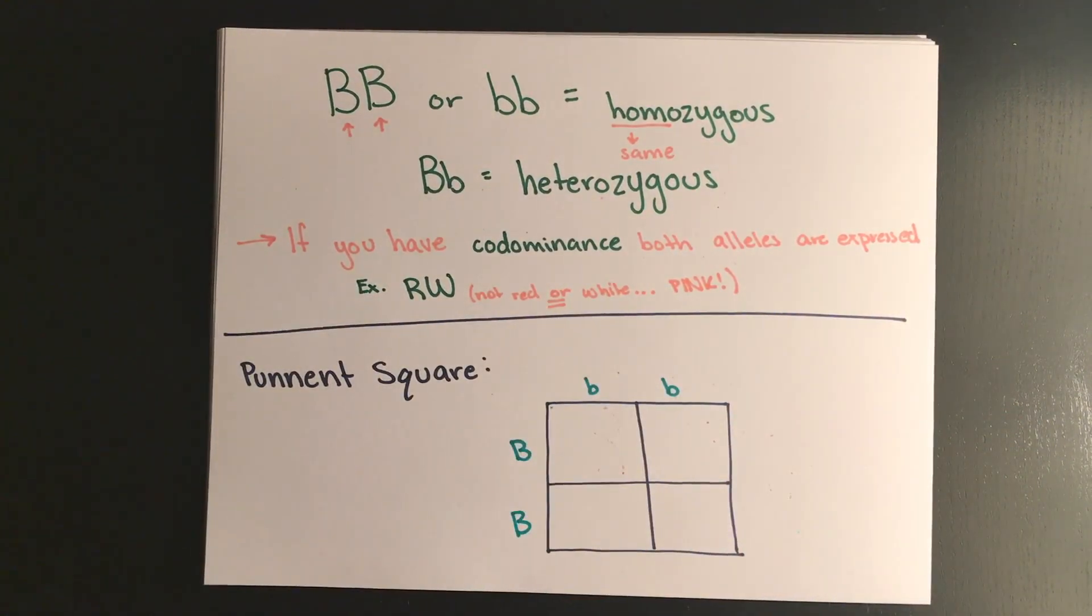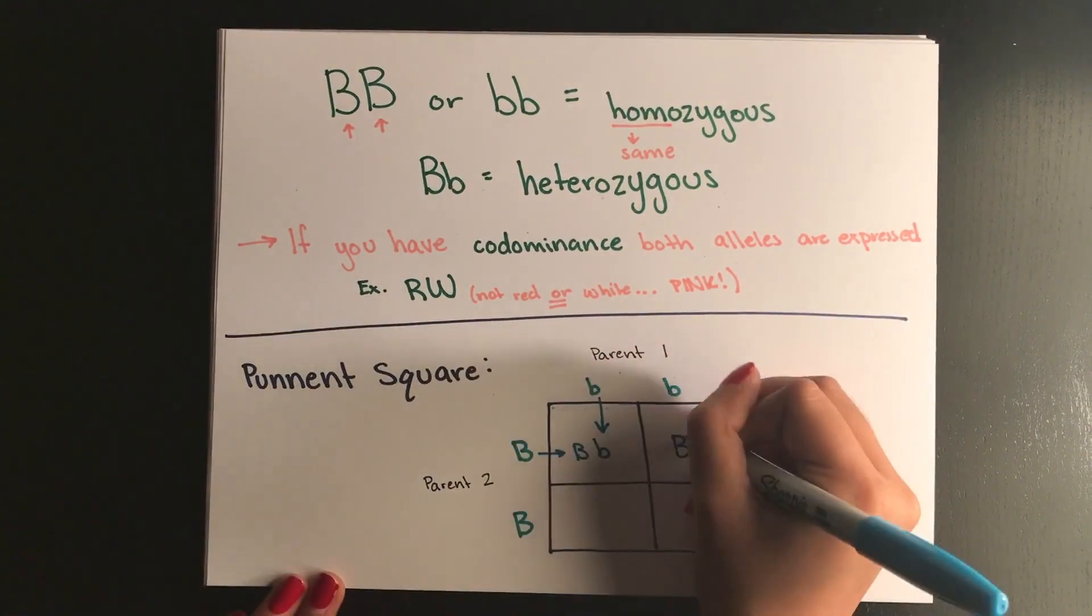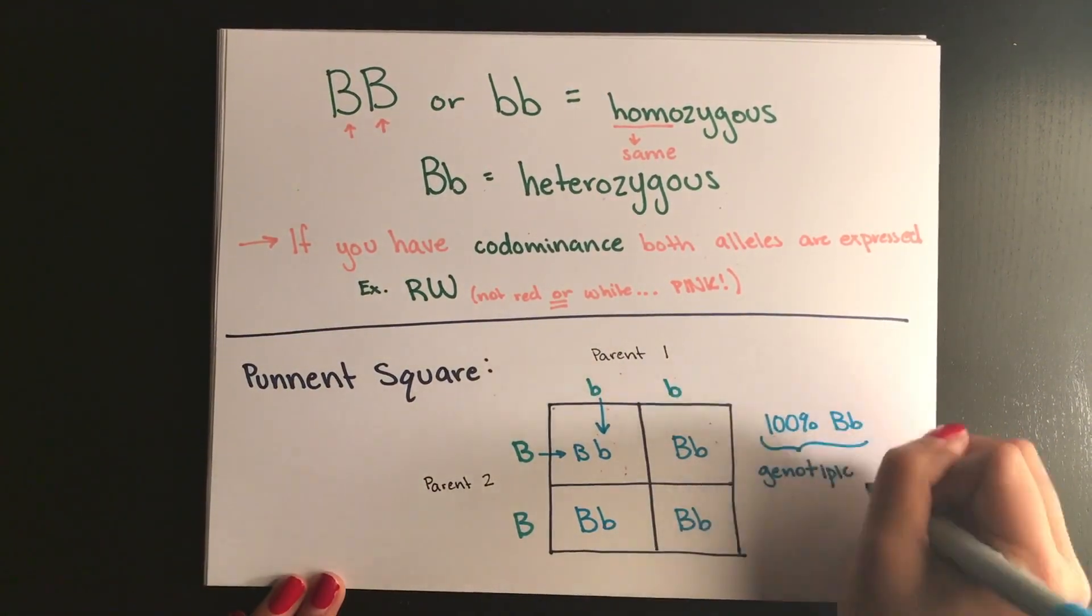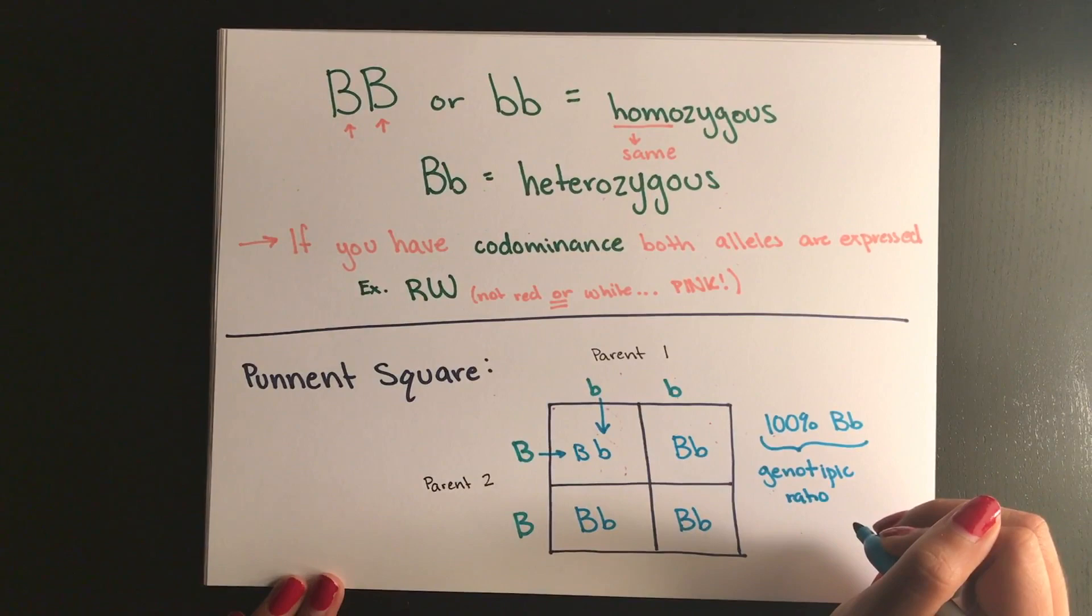Along the sides of the box you indicate the genotypes of the two parents, and within each square you combine the male and female alleles to create a potential genotype for your offspring.